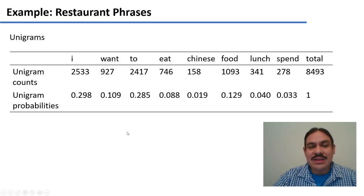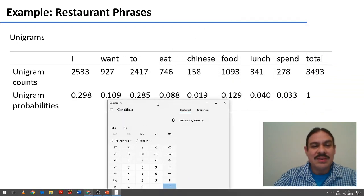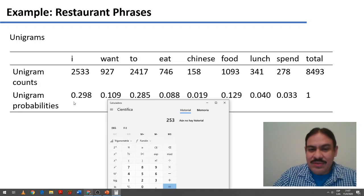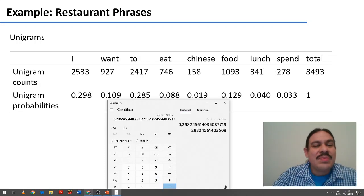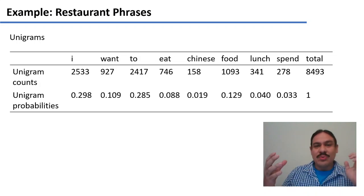And then we add all those up and it's 8,493 times that we see those eight words. So from that we can get the probability of observing the unigram I, which is 2533 divided by the total 8493. So it's 29.8%. And when we add all those probabilities, we get 1 or 100% because this is the total for the words.